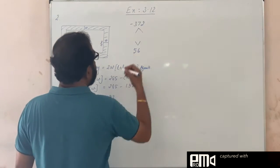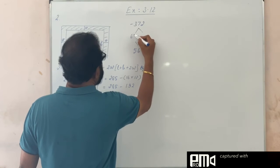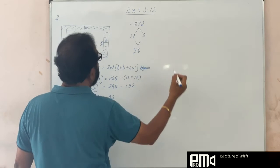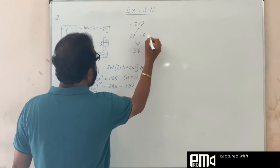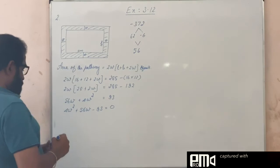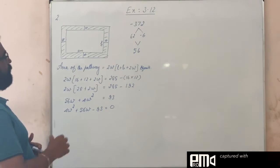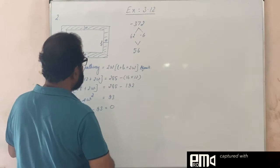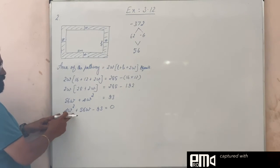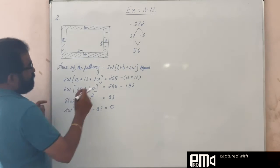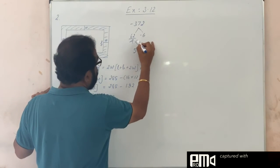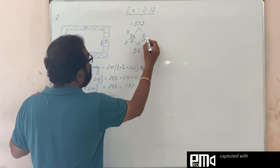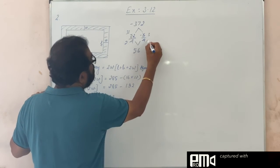By trial and error we find the two factors are 62 and minus 6. The coefficient of W squared is 4, so we divide: 62 by 4 gives 31 by 2, and minus 6 by 4 gives minus 3 by 2.